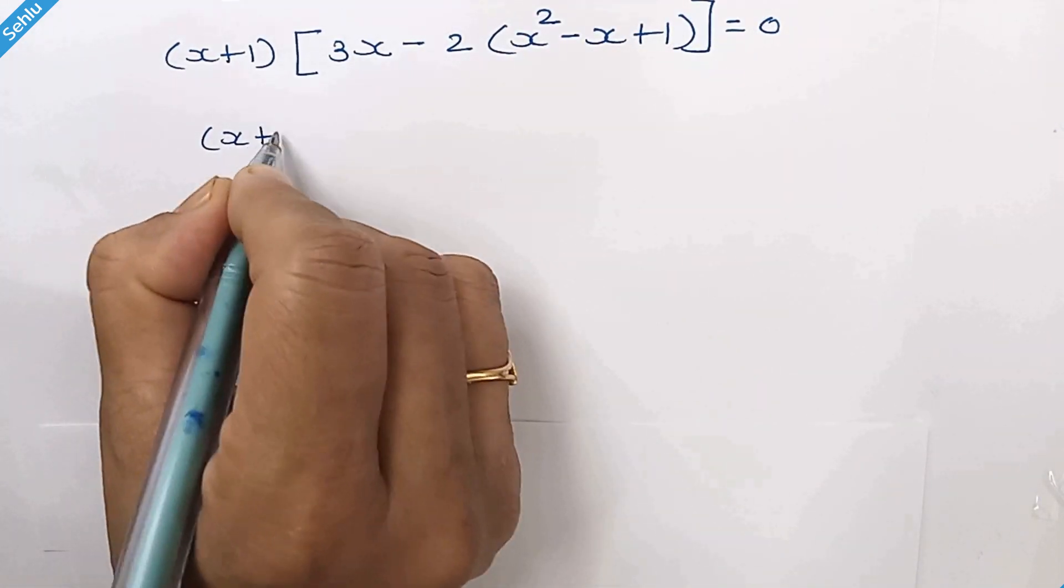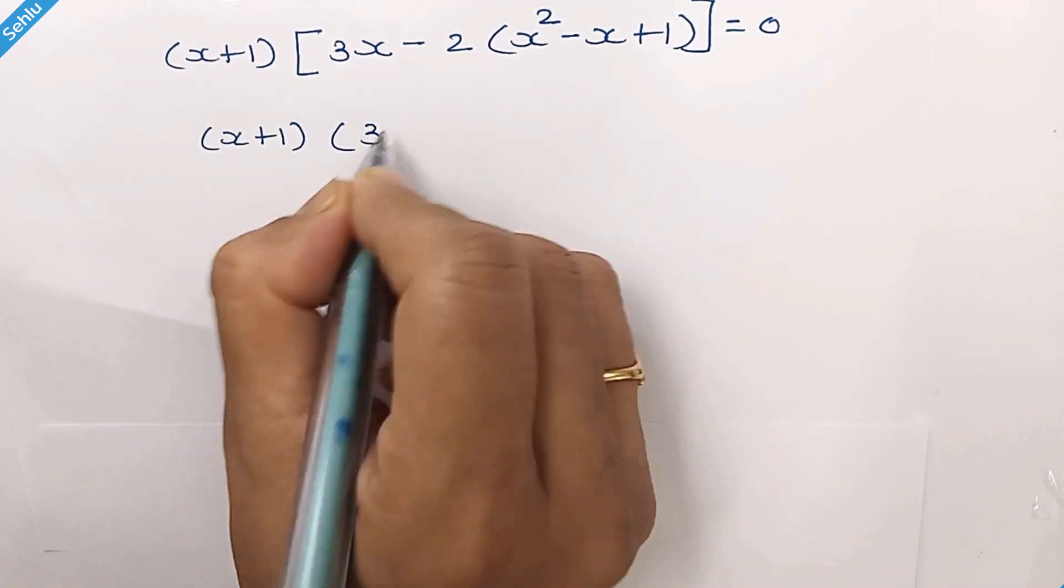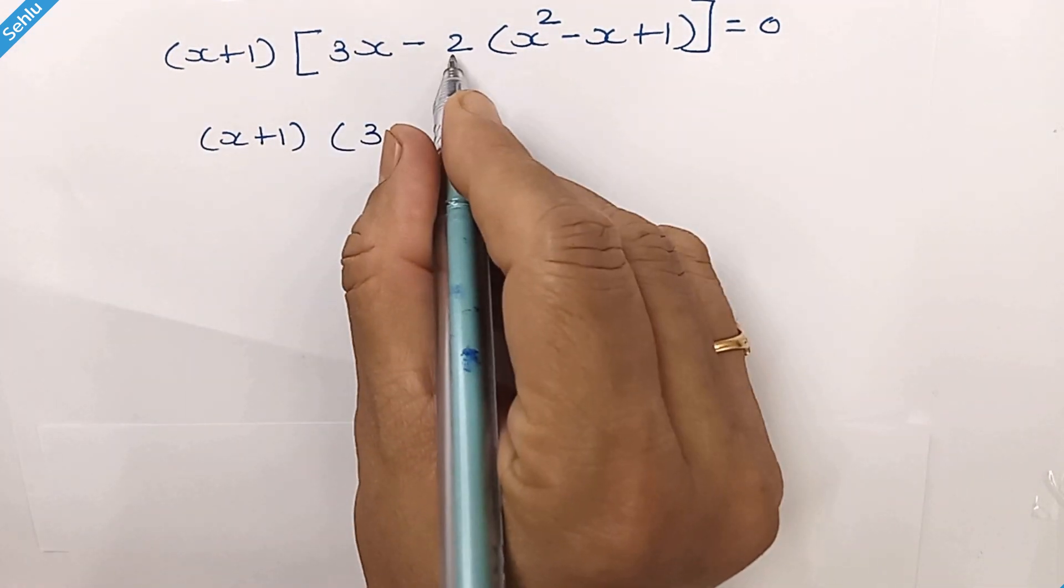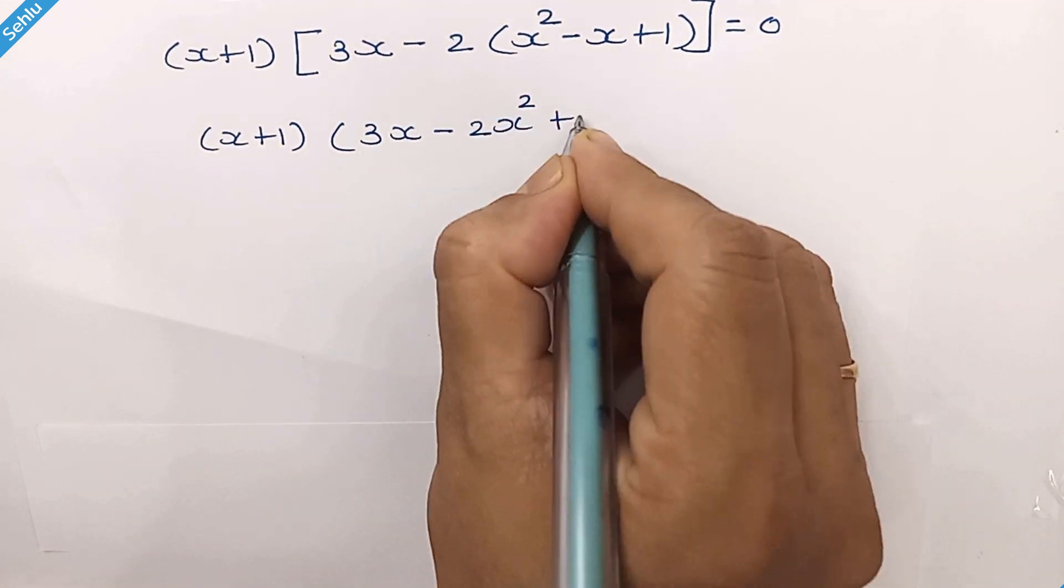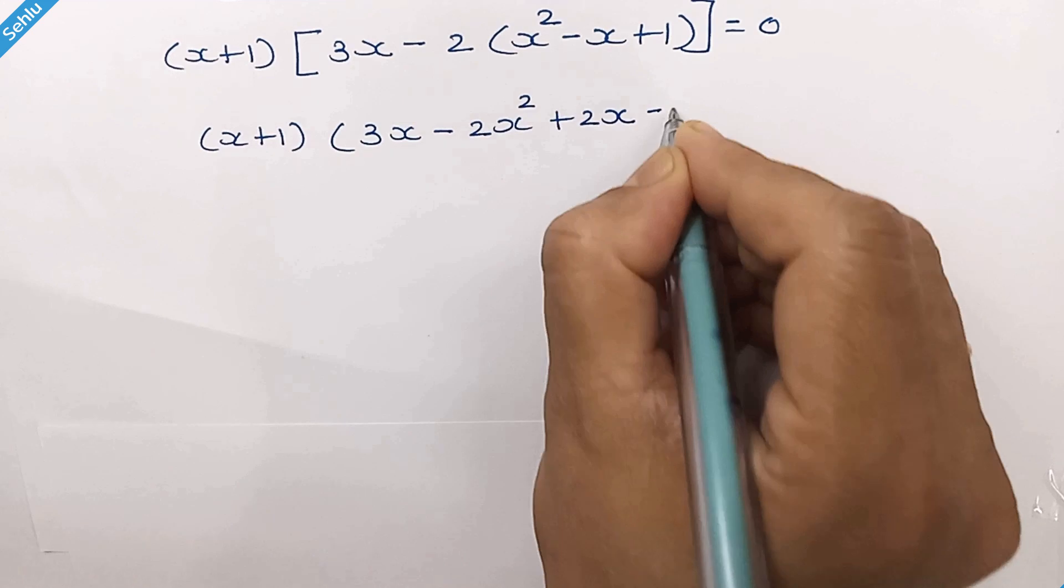So in the next step, we have x plus 1 times 3x minus plug in 2 into this bracket. So it will be 2x square plus 2x minus 2.